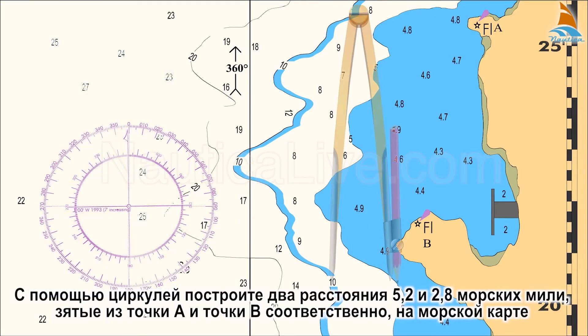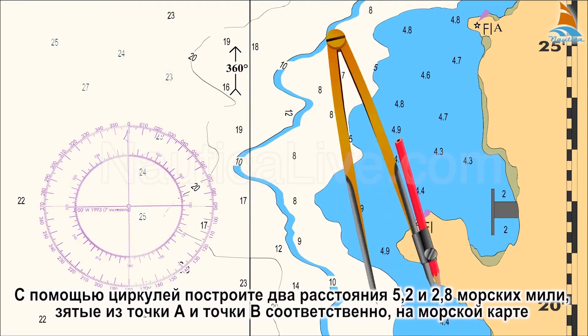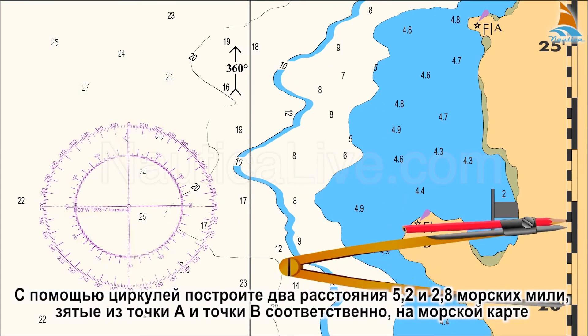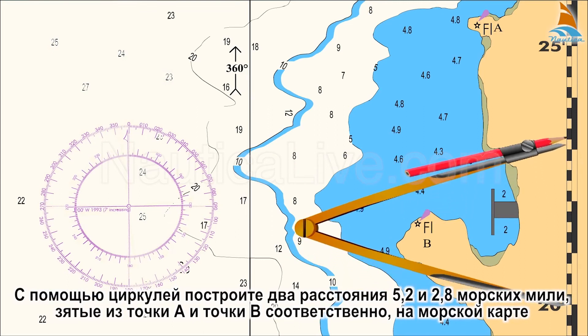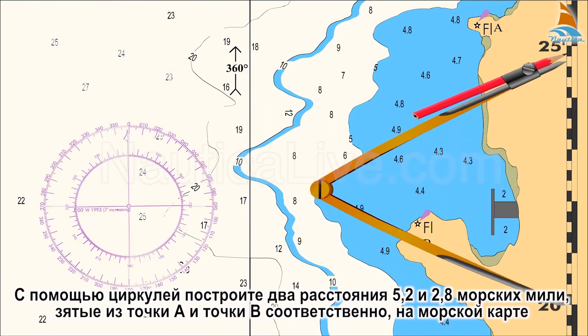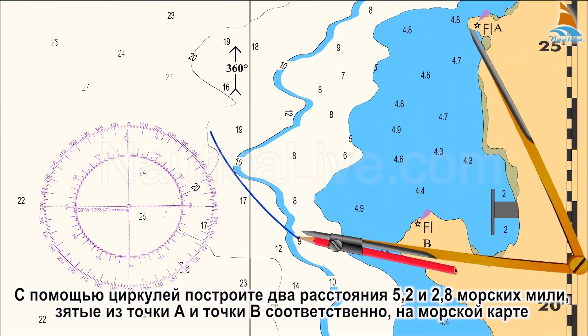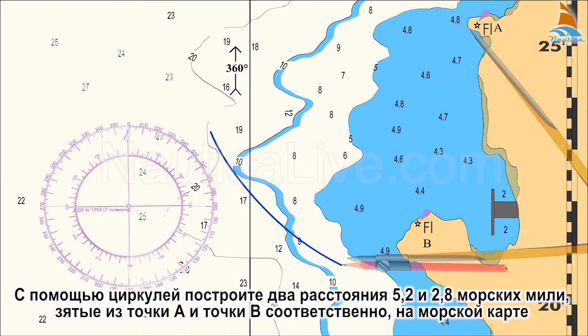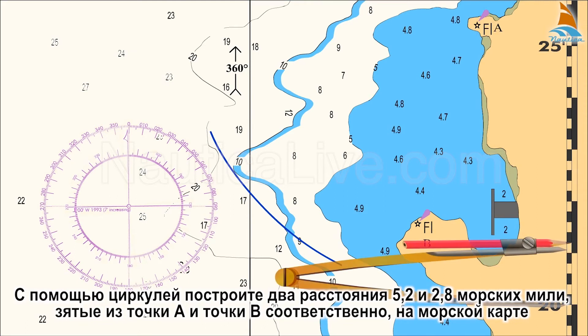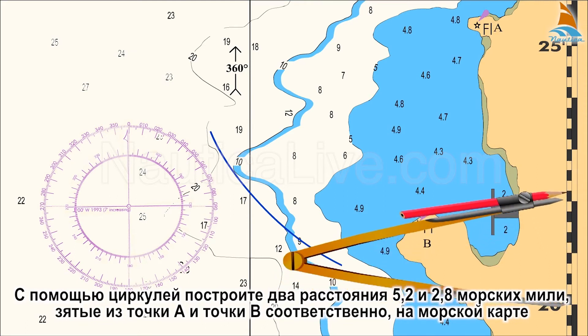Using the dividers, you plot the two distances — 5.2 and 2.8 nautical miles — taken from point A and point B respectively, to the nautical chart.